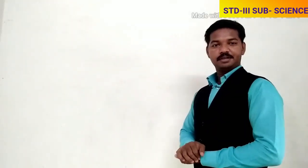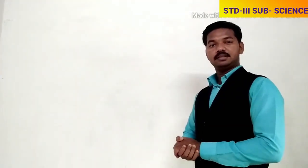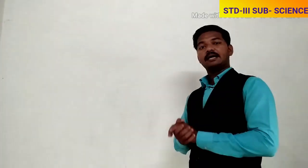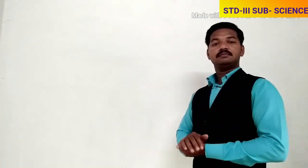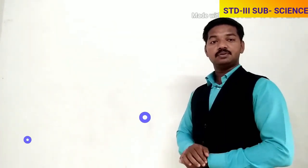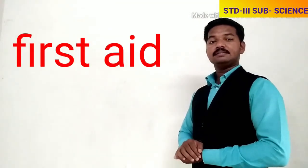Hello friends, last period we learned about safety rules when we are in a moving bus, on the road, on the playground, at home, and in the classroom. Even so, we can still get some injuries. After an injury, we have to inform our parents, or if we are in school, we have to inform our teacher. After an accident, the first help given to an injured person is known as first aid.